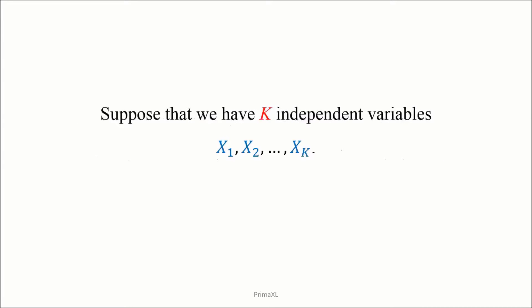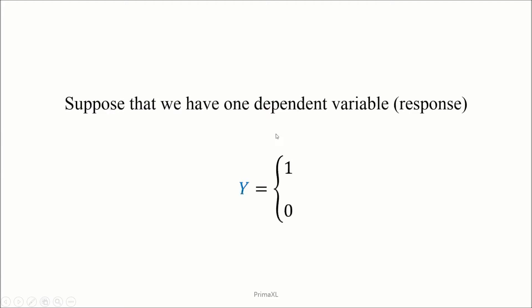Let's do a quick recap of the logistic regression. Let's suppose that we have k independent variables. They are usually denoted as x1, x2, up to xk. Let's suppose that we have one dependent variable, also called the response. It is usually denoted as y. y can be either 1 or 0.